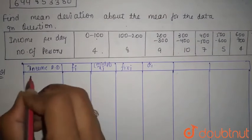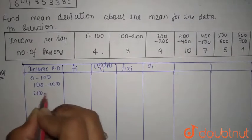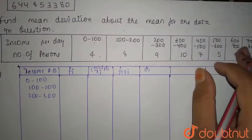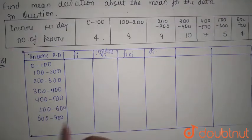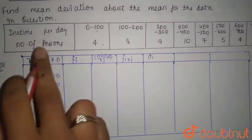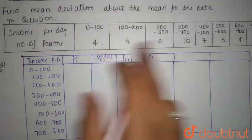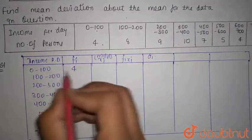First of all, we have given income per day, that is class. So 0 to 100, 100 to 200, 200 to 300, and similarly up to 600 to 700 and then 700 to 800. Then this is fi, that is number of person.